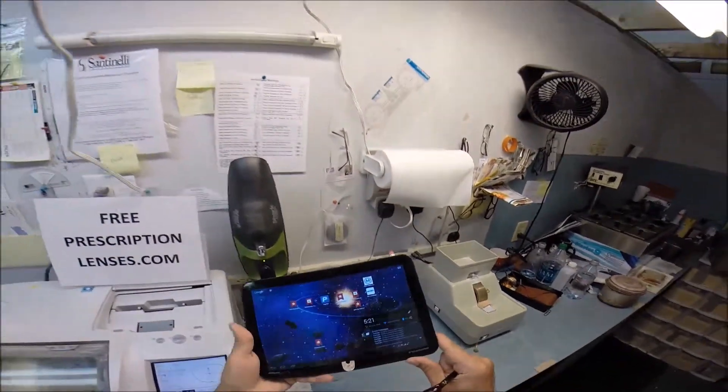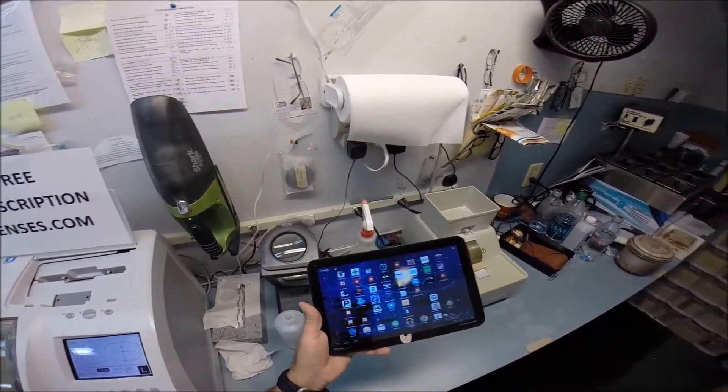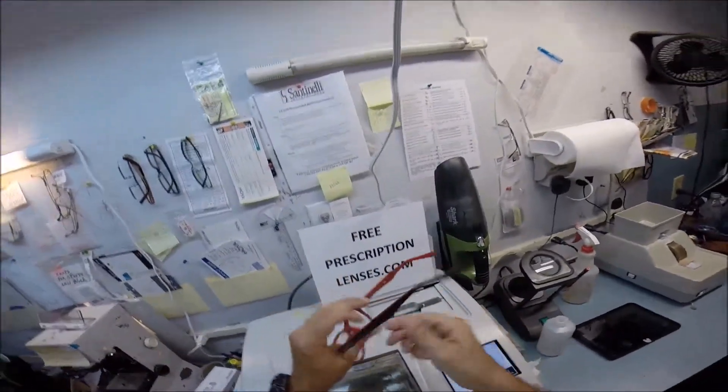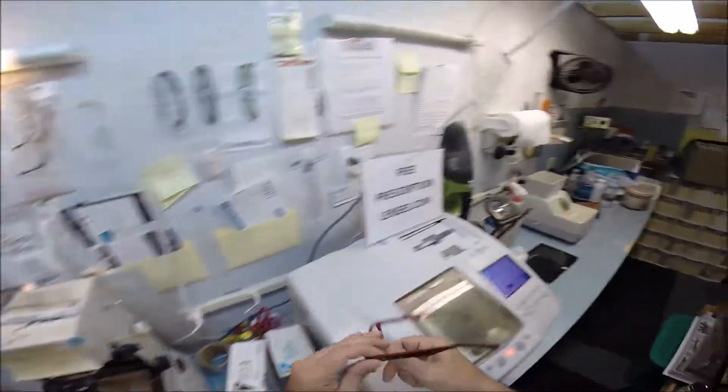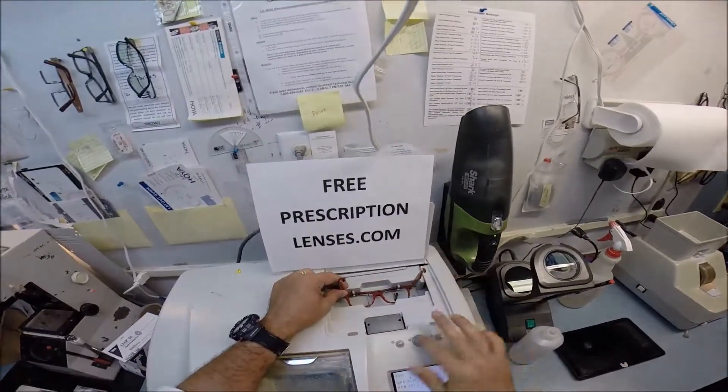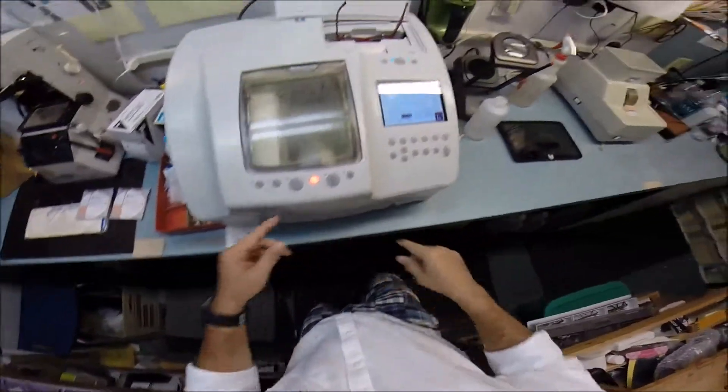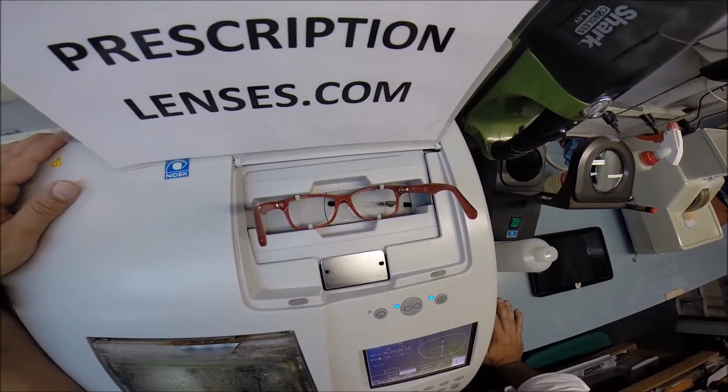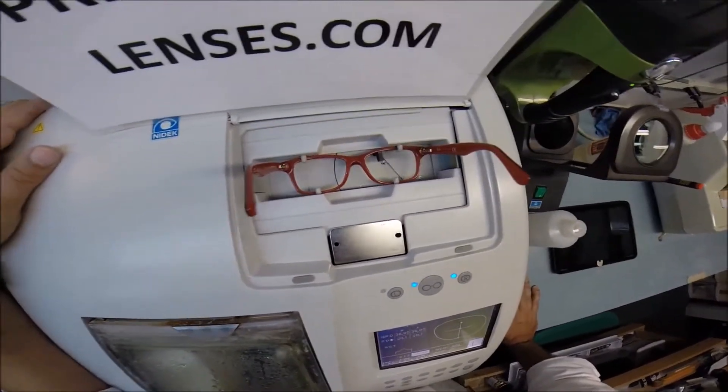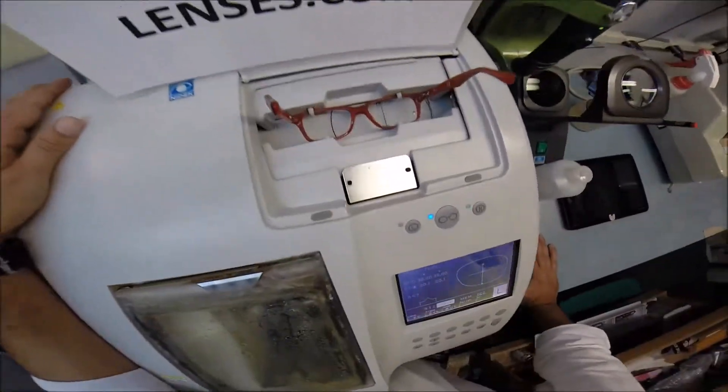Let me set everything down and get to work. I'm taking out the original demo lenses and putting this Ray-Ban frame into my $30,000 Santanelli LE 1000. The stylus has popped up and is tracing the shape of the right lens, then it's going to move over and trace the left.